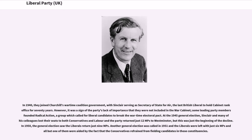Some leading party members founded Radical Action, a group which called for Liberal candidates to break the wartime electoral pact. At the 1945 general election, Sinclair and many colleagues lost their seats and the party returned just 12 MPs to Westminster, but this was just the beginning of the decline. In 1950, the general election saw the Liberals return just 9 MPs. Another general election was called in 1951 and the Liberals were left with just 6 MPs, all but one aided by the fact that the Conservatives refrained from fielding candidates in those constituencies. In 1957, this total fell to 5 when one Liberal MP died and the subsequent by-election was lost to the Labour Party. The Liberal Party seemed close to extinction; it was often joked that Liberals could hold meetings in the back of one taxi.